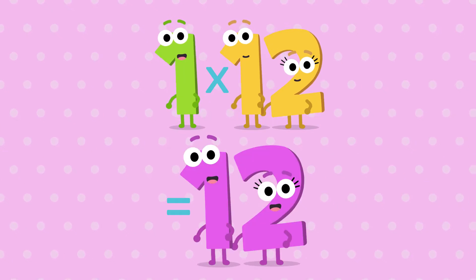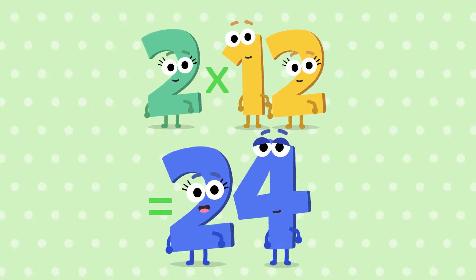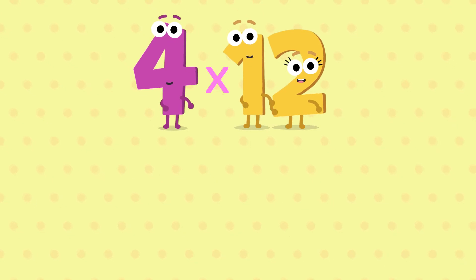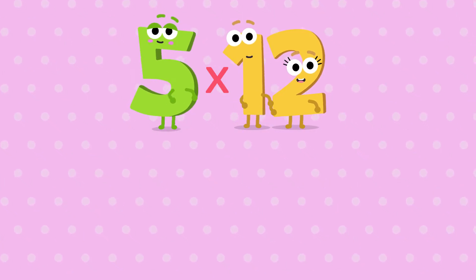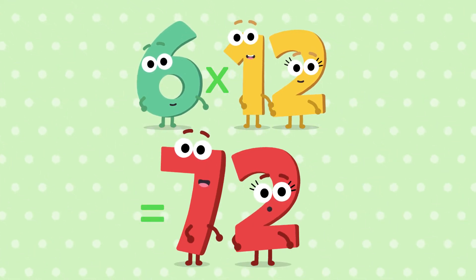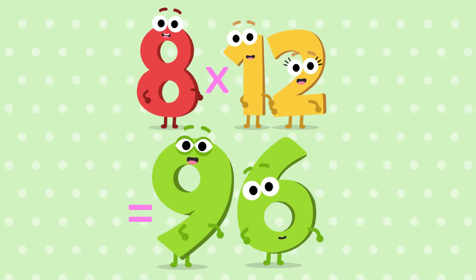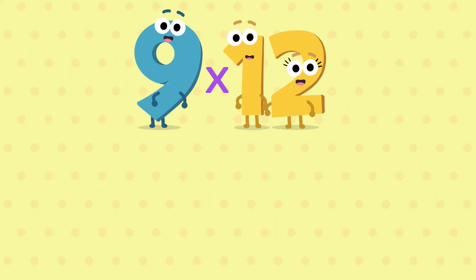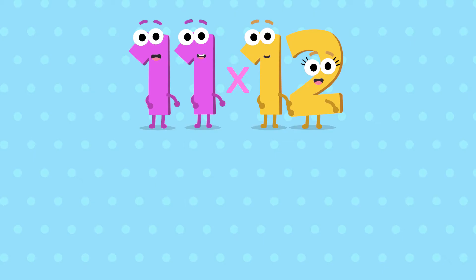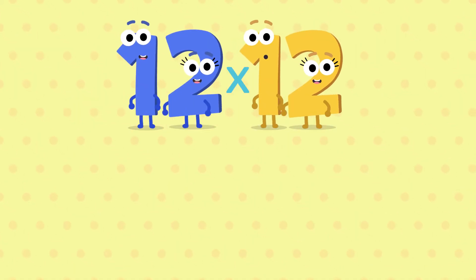1 12 is 12, 2 12's are 24, 3 12's are 36, 4 12's are 48, 5 12's are 60, 6 12's are 72, 7 12's are 84, 8 12's are 96, 9 12's are 108, 10 12's are 120, 11 12's are 132, 12 12's are 144.